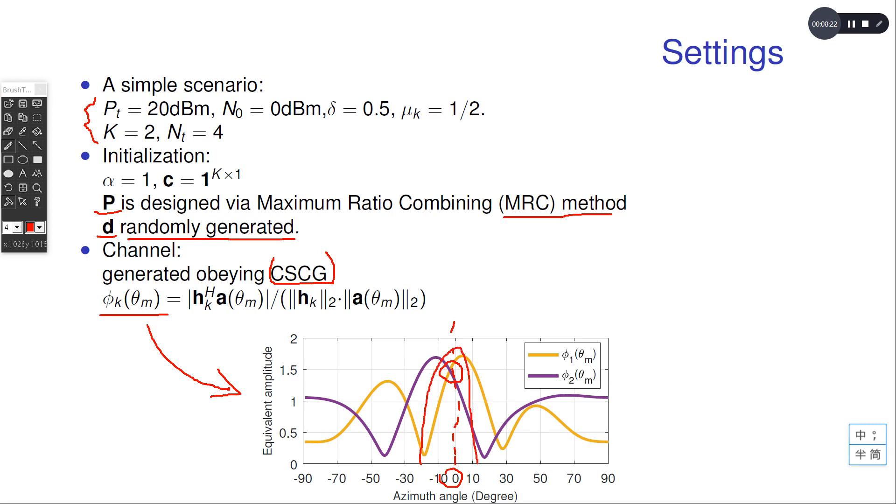This means no matter what private stream we use to form a beam at this place, it will cause very strong interference to another. This means at the zero degree, there is a strong conflict between the radar beam pattern forming task and communication task.